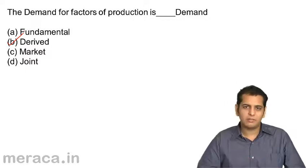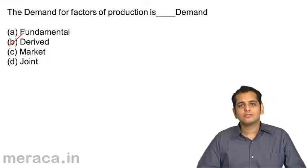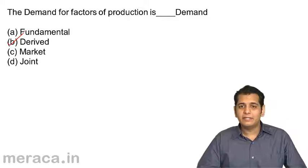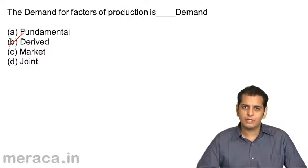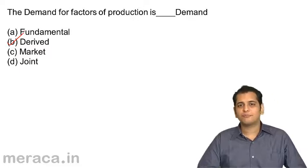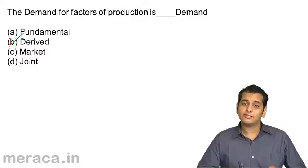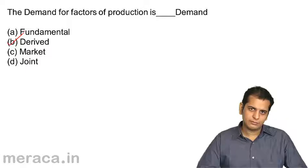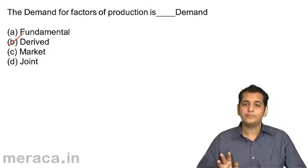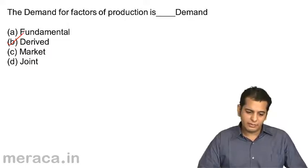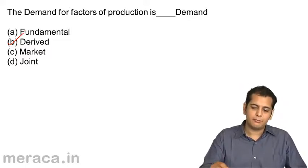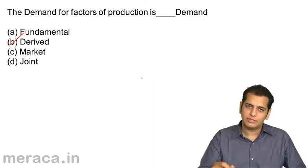It is a derived demand because no person directly demands for factors of production. People generally tend to demand for goods and services, and for production of those goods and services, factors of production are required and thus demanded. So, it is because of the demand of goods and services that the factors of production are demanded. Thus, we say that the demand for factors of production is derived demand.